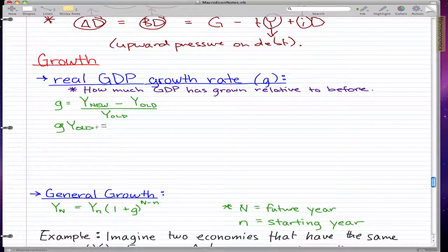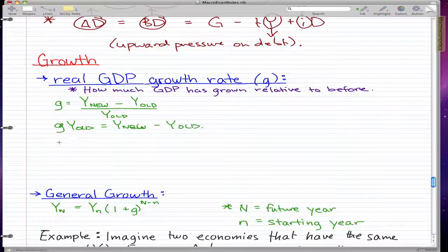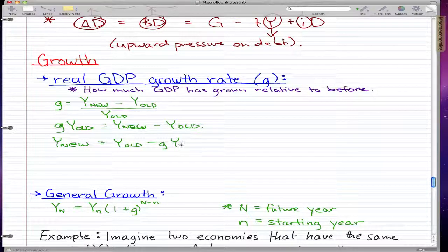We get G Y old equal to Y new minus Y old. Now, if you move this Y old to the other side, then we'd get Y new equal to Y old plus G Y old.